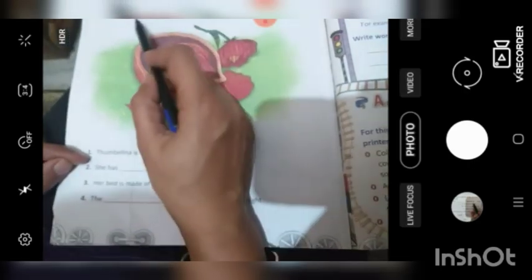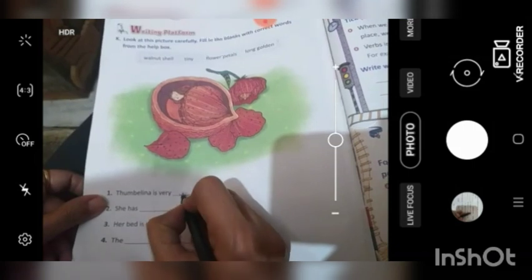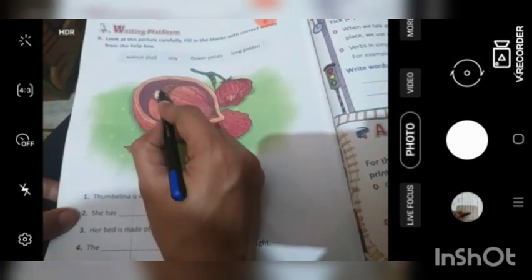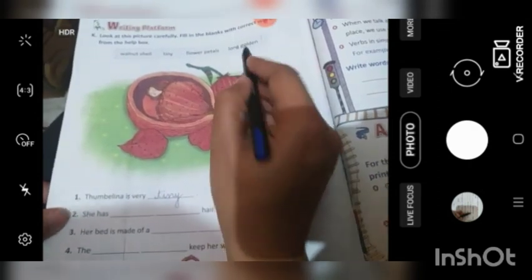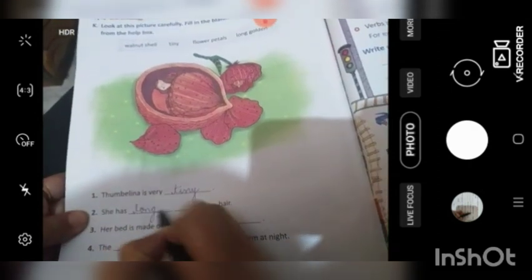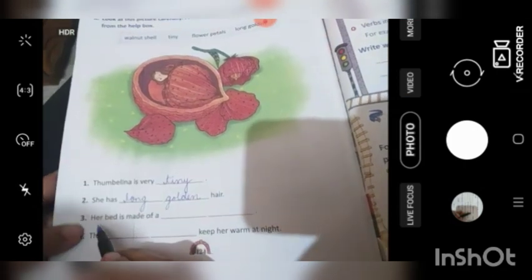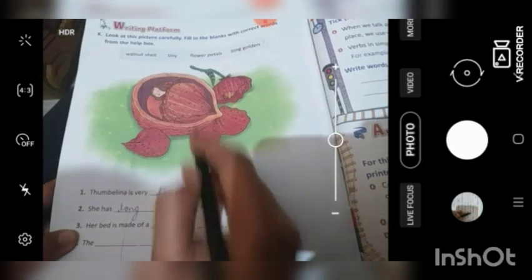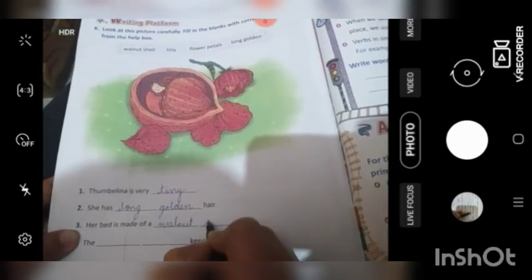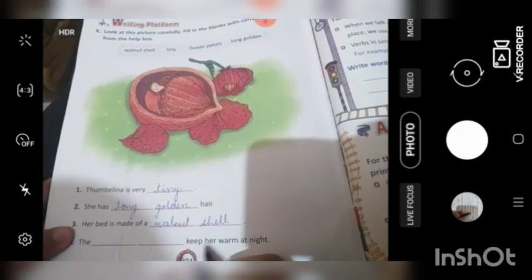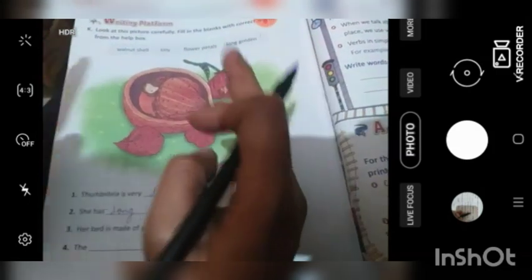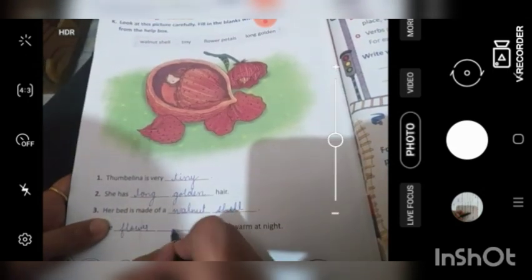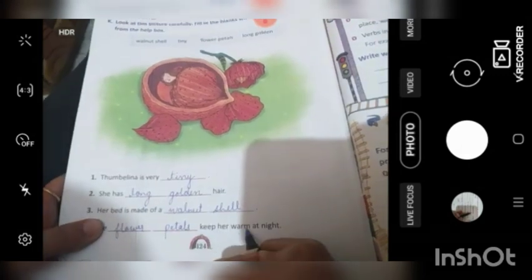Thumbelina is very, kaise hai Thumbelina? Walnut shell? No. Tiny. Thumbelina is very tiny. Wo bohat choti hai. She has dash hair. Kaise baal hai uske you can see? Long. And what's the color? Golden. She has long golden hair. Her bed is made of, Yee kis kya dikhai de rah hai? Aap log khate hai ek dry fruit hai. Walnut. Walnut shell. The dash keep her warm at night. Wo kisse dhaki hai? Jisse wo garam rehti hai. The flower petals. Deekho. Flower petals are over her body. Flower petals keep her warm at night.